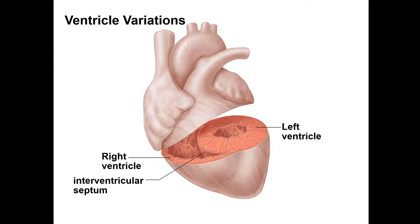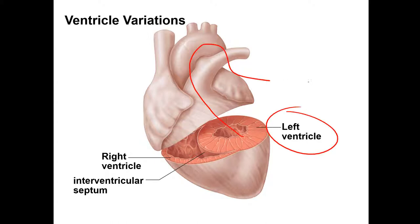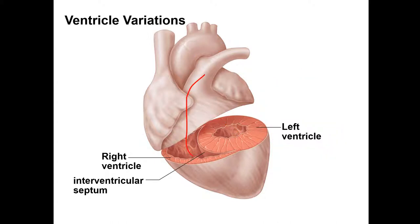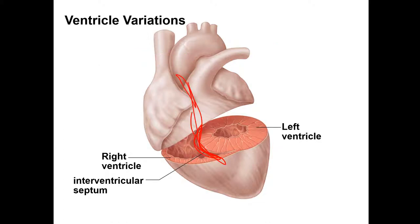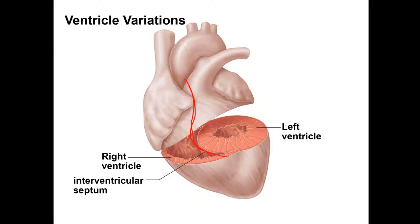Understand the differences between the left and right ventricles — specifically why the left ventricle is so much thicker in musculature. The left ventricle has to pump blood far away throughout the body, while the right ventricle only pumps into the nearby lungs, so it doesn't need to be as strong. Also understand the septum — the tissue that divides the chambers of the heart. It's all continuous: the interventricular septum divides the ventricles and the interatrial septum divides the atria.